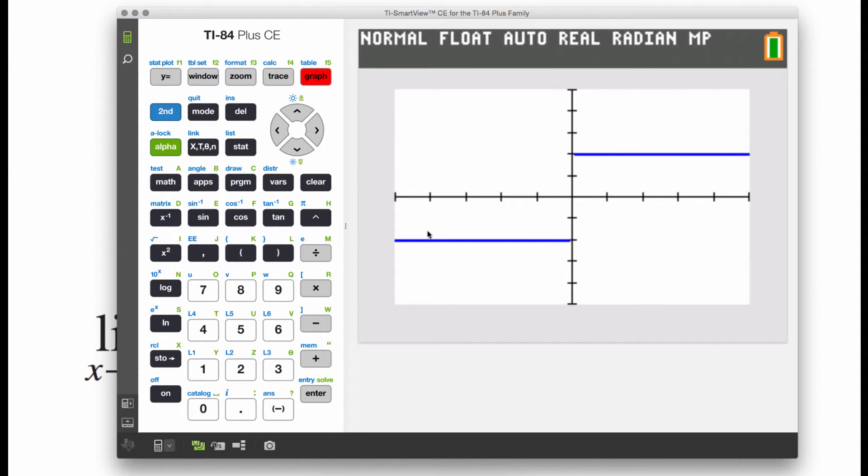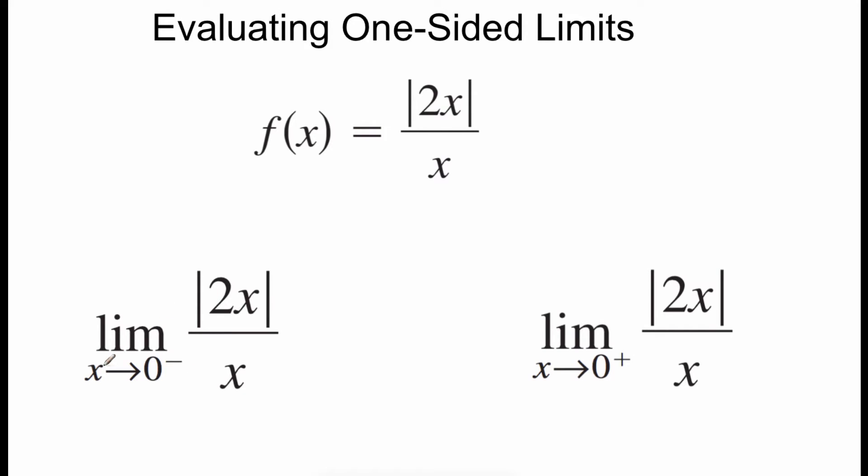Well, we can see that as our graph approaches 0, we're looking at a couple of different values. So this limit doesn't actually exist, but we can look at each piece individually. So as we approach 0 from the left-hand side, we can see that our one-sided limit is negative 2. But as we approach 0 from the right-hand side, we can see that this one-sided limit is positive 2. So the limit of our function as x approaches 0 from the left-hand side, we said that was going to be negative 2. And the limit of our function as x approaches 0 from the right-hand side, we said that one was positive 2.